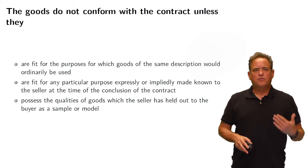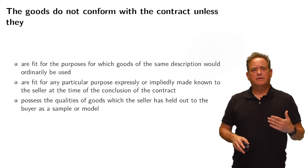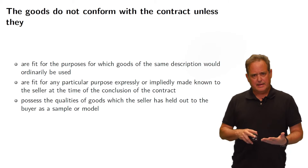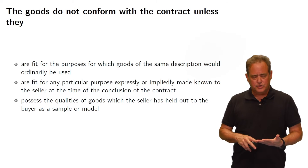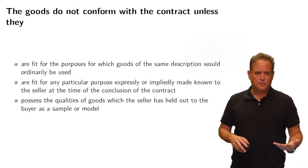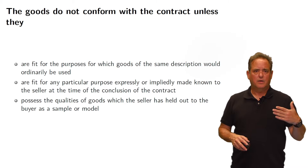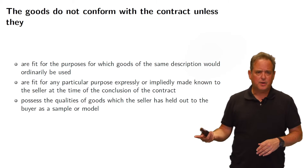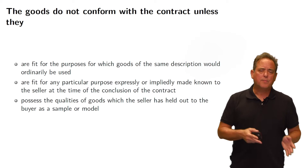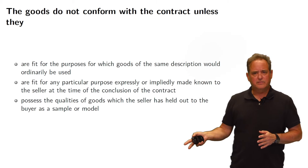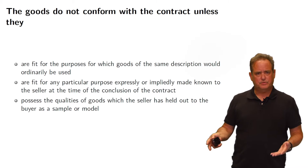In summary, there are three ways goods must be construed as conforming: fit for ordinary purposes, fit for a particular purpose, or possessing the qualities of a provided sample.